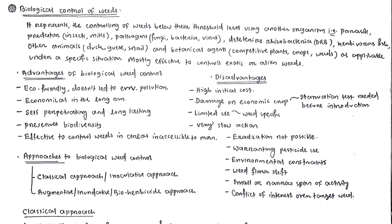Hello students, welcome back to our channel. Today we are going to cover the biological control of weeds, or biological weed control. The name itself suggests what this is about — we are using biological agents to control weeds. Biological agents means living organisms.